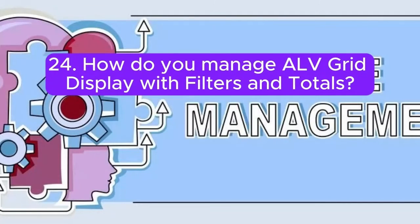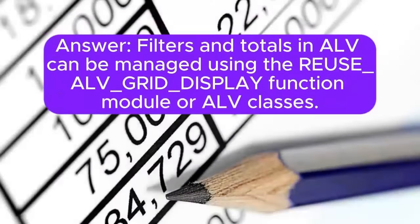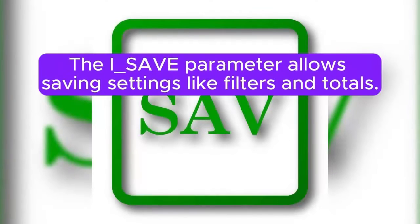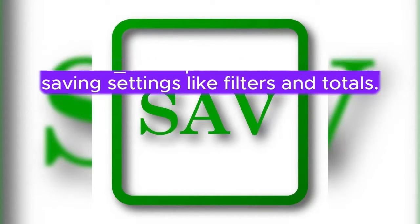Question 24: How do you manage ALV grid display with filters and totals? Answer: Filters and totals in ALV can be managed using the REUSE_ALV_GRID_DISPLAY function module or ALV classes. The IS_SAVE parameter allows saving settings like filters and totals.